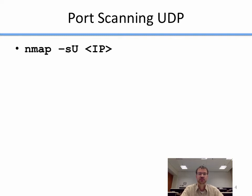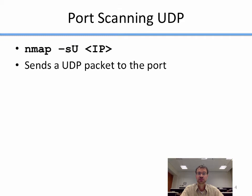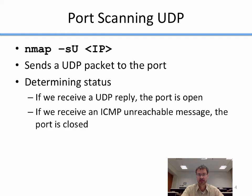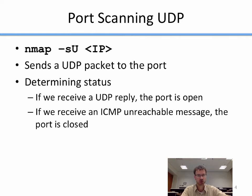So how do we do port scanning with UDP using NMAP? The command line option is -sU (capital U), and this sends a UDP packet to the port you're interested in. If we receive a UDP reply, that means the port is open, because some service on that port sent us a packet back. If we receive an ICMP unreachable message, that means the port is closed — that's how the UDP standard specifies it. ICMP is a different protocol from UDP, but that's just the way UDP is set up.